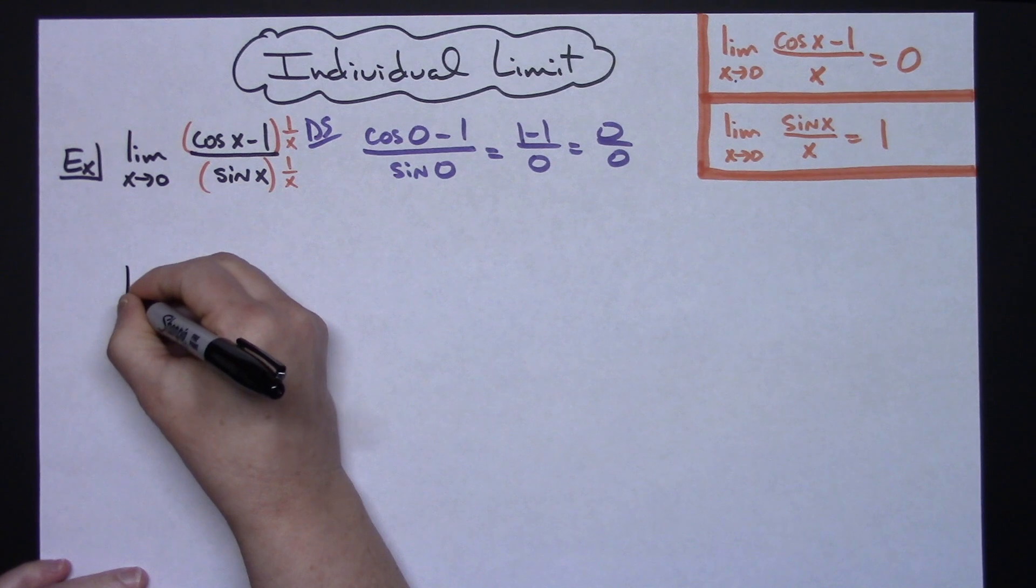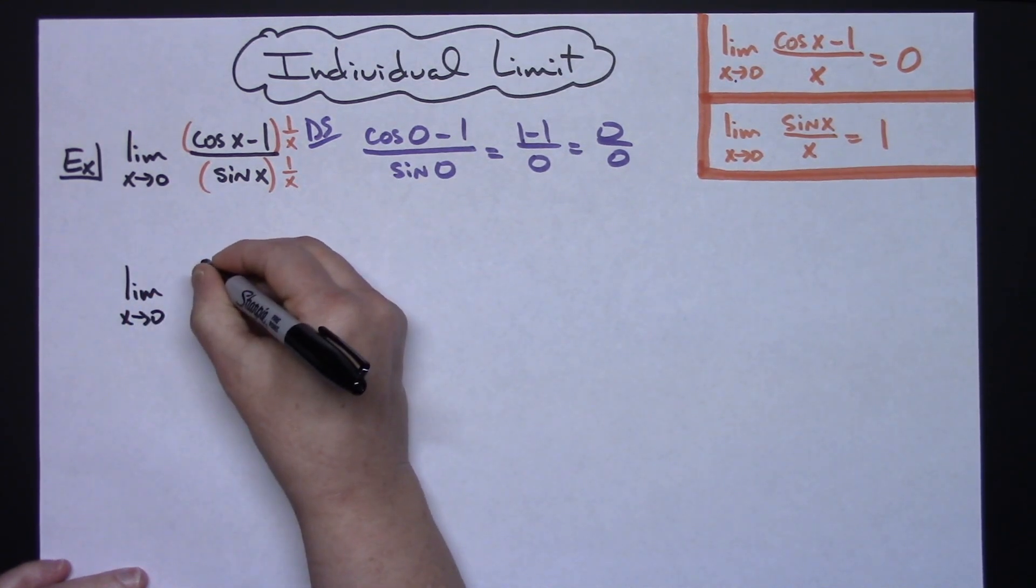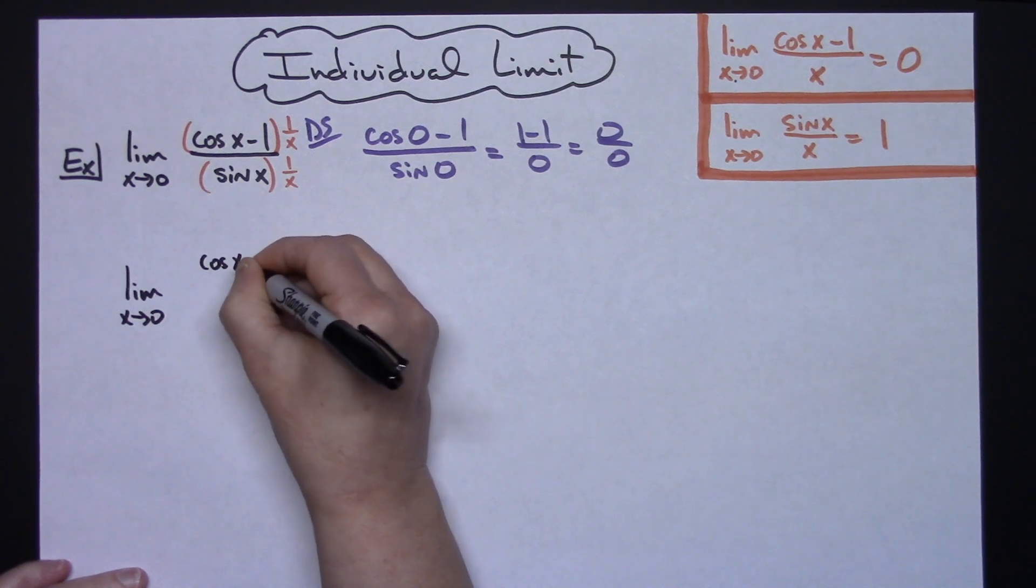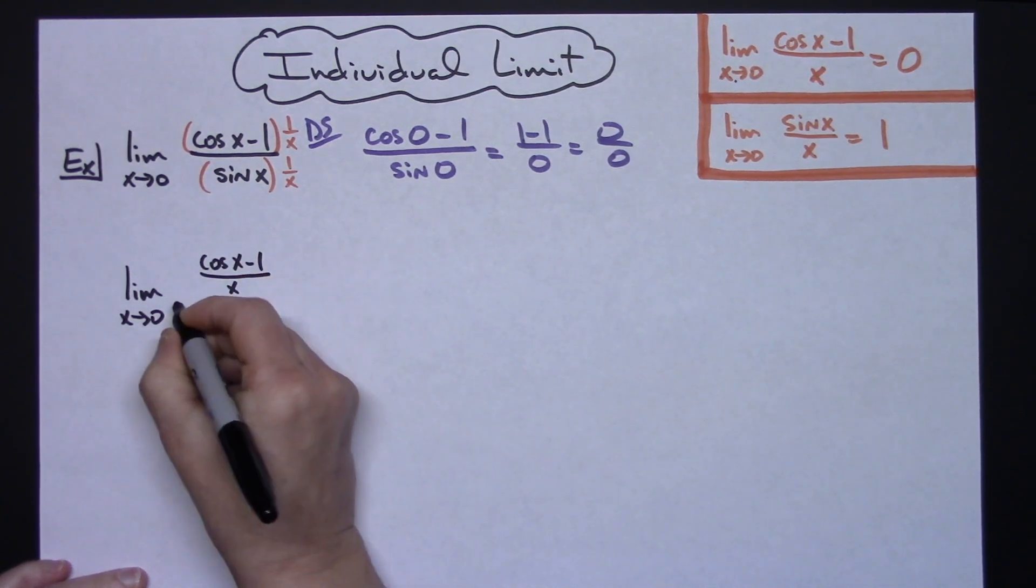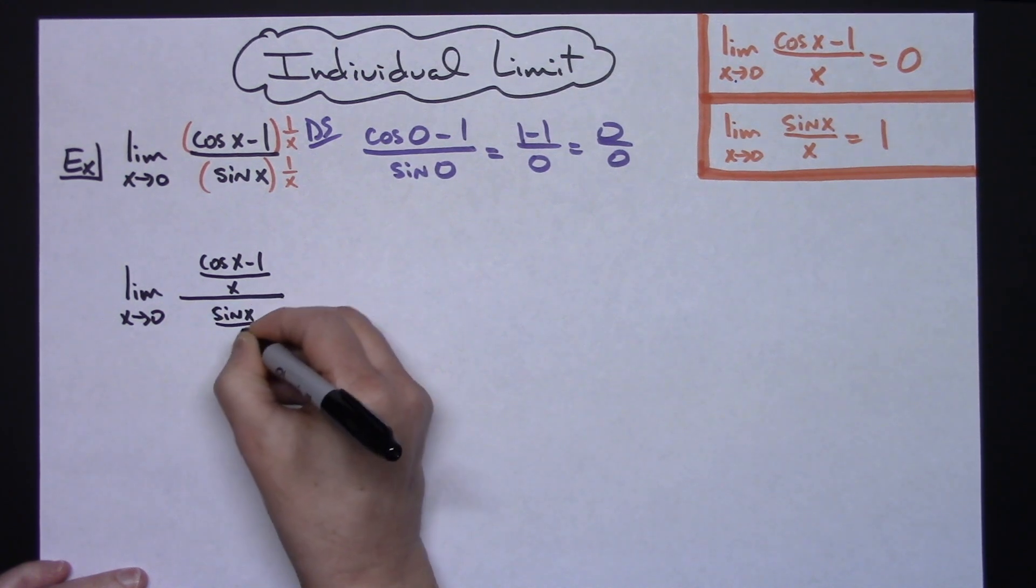Doing that, I'm going to have the limit as X approaches 0. On top I will have cosine of X minus 1, all over X, and then in my denominator I will have sine X over X.